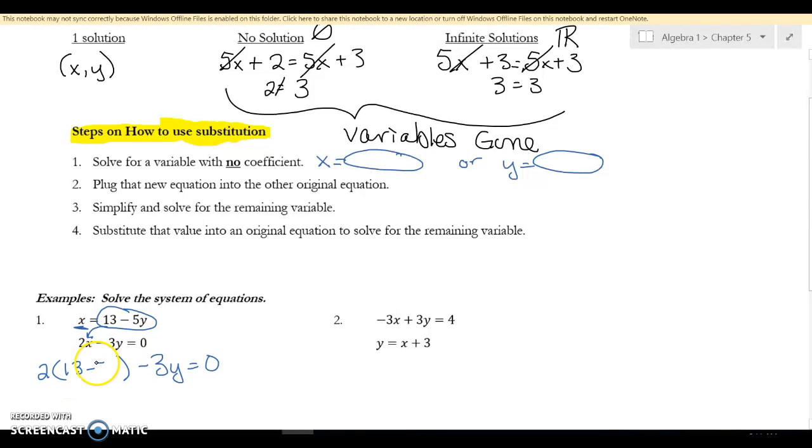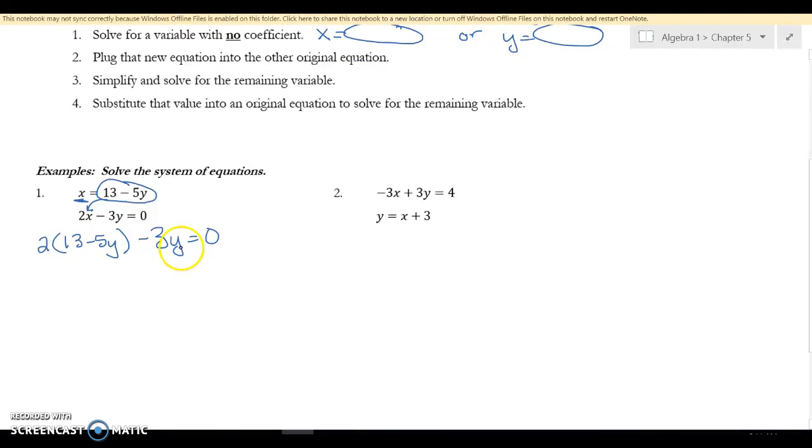Now what I'm plugging in is the thirteen minus five Y. A good place for you to check now is when you plug it in, do you have the same variable? I have two Y's. If you ever have an X and a Y, then that means you plugged it in the wrong spot, so you need to try and fix that. That's the hardest step: figuring out what you're gonna plug in and where you're gonna plug it in. Now we just get to do some algebra.